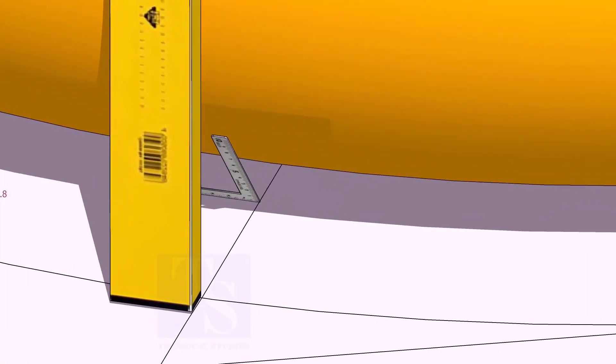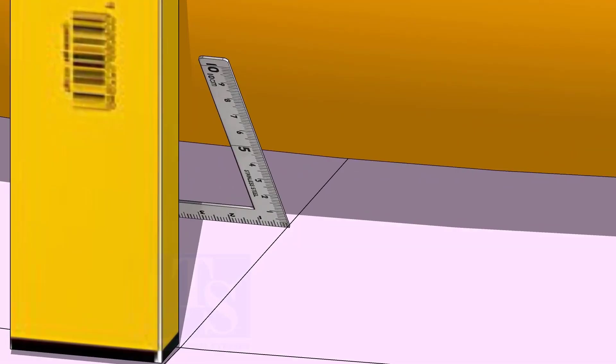At the bottom side, use a small right angle and transfer the line to the elbow on both sides.